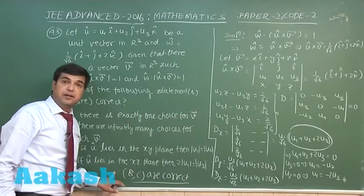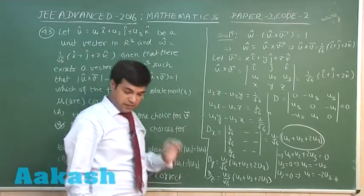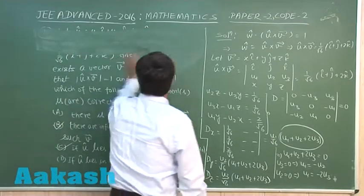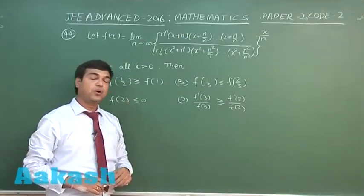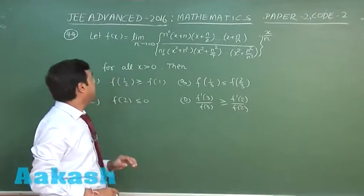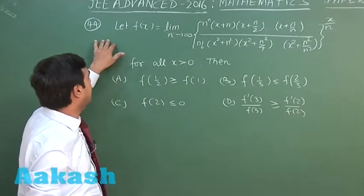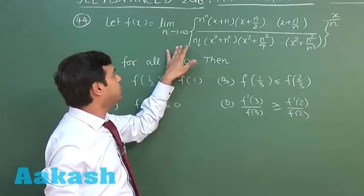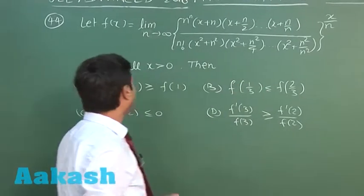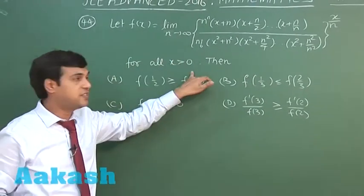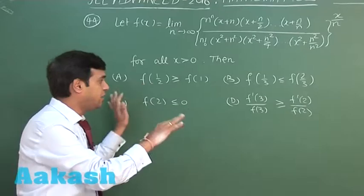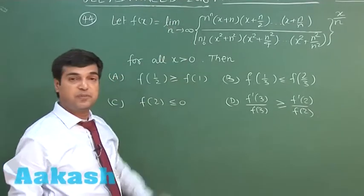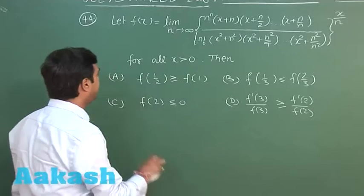Let's move to question number 44. Let f(x) = limit as n→∞ of some expression, for all x > 0. We have to choose from four options. We will take this towards the definite integral approach.